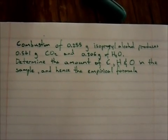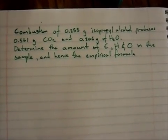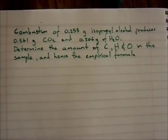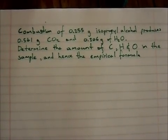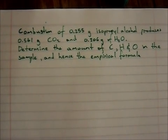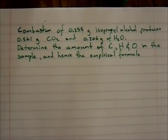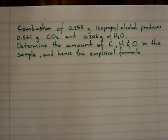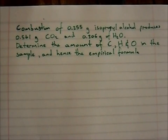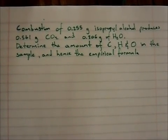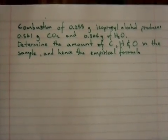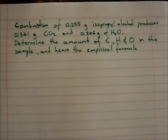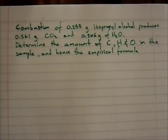Today I will be doing combustion analysis and empirical formula once more. The question reads: combustion of 0.255 grams of isopropyl alcohol produces 0.561 grams of carbon dioxide and 0.306 grams of water. Determine the amount of carbon, hydrogen, and oxygen in the sample, and hence the empirical formula.